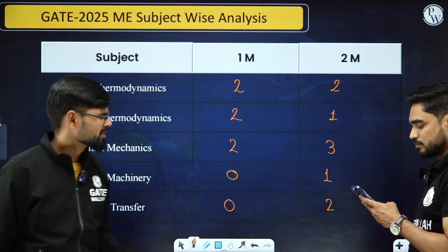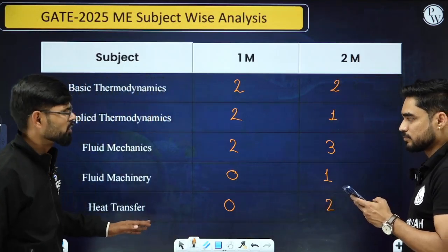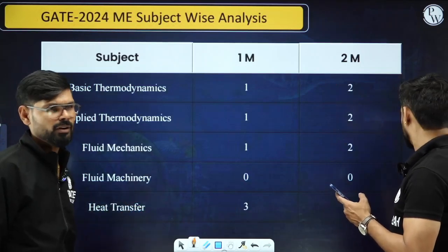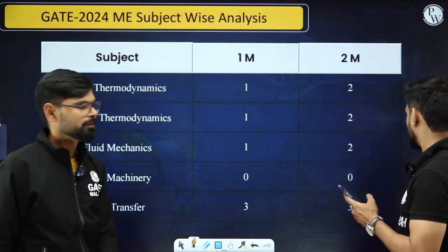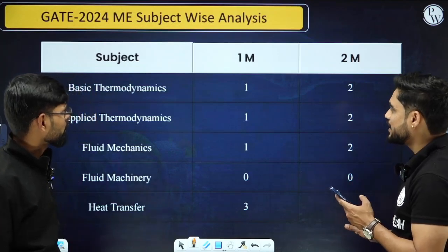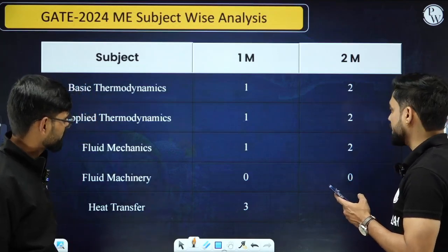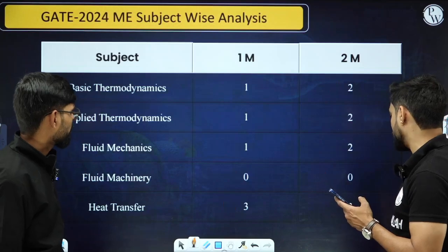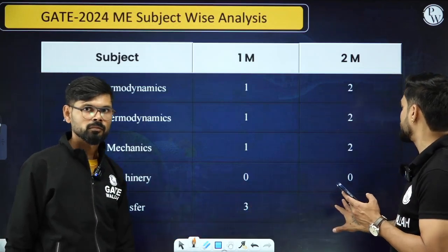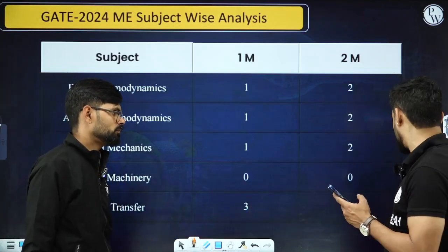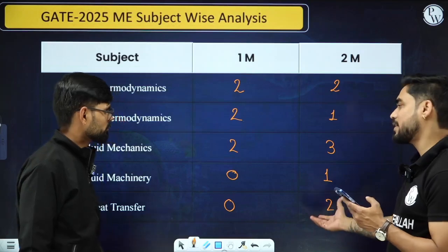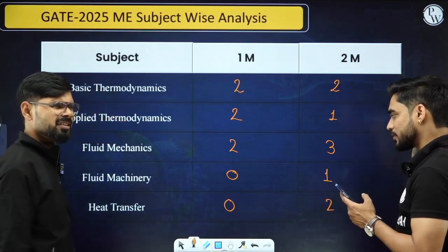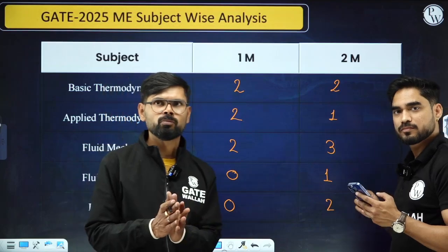Almost every year the same pattern is there — last year also almost 23-24 marks were asked from the thermal-fluid area. But the weightage has been slightly changed. Last year from heat transfer there were three one-mark and three two-mark questions, so six questions total. But this year only two questions from heat transfer.